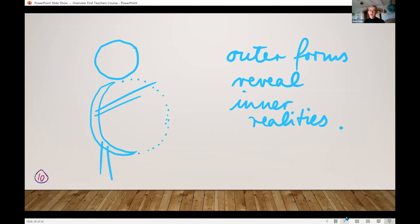Outer forms reveal inner realities. Things aren't the shape they are for random reasons. They are like that because they're meant to be like that. Steiner draws this rather weird little being to illustrate the threefoldness of the human body. This is all about the human body now. I'm going to briefly shock you into submission by bringing the concept of the double metamorphosis.